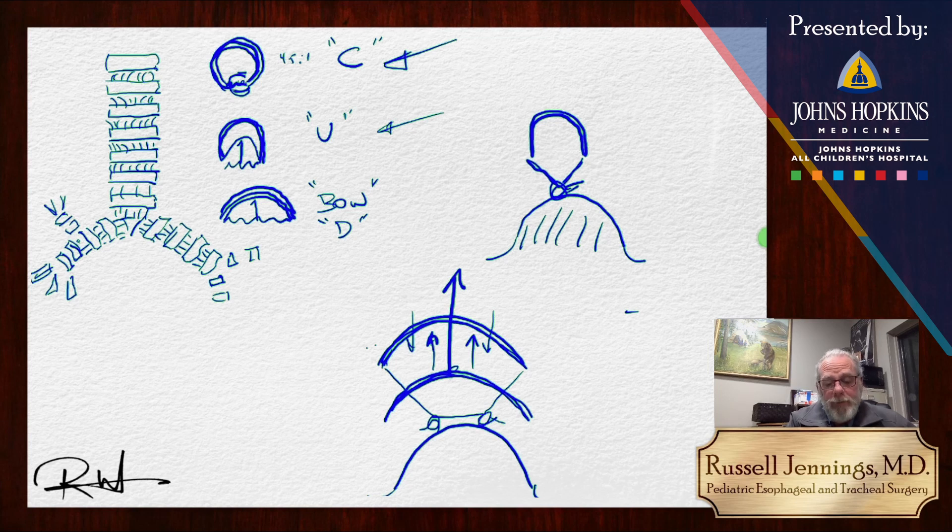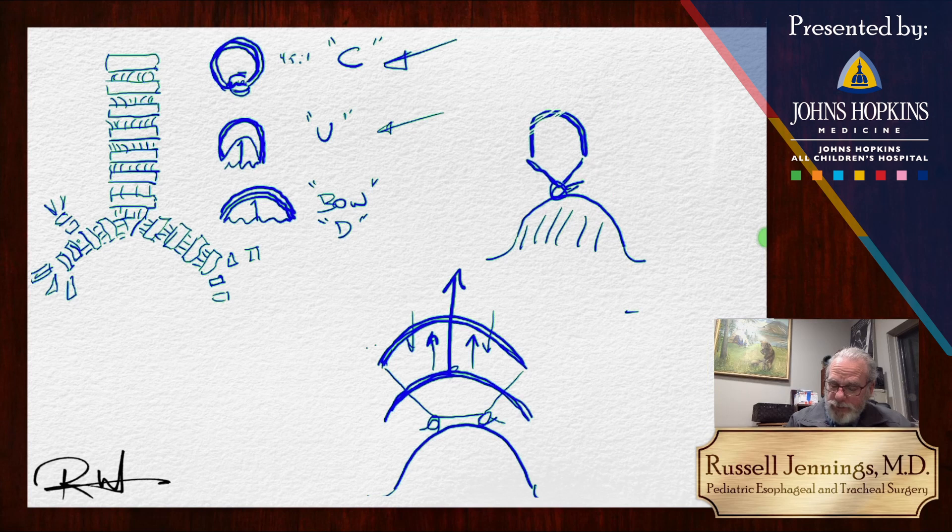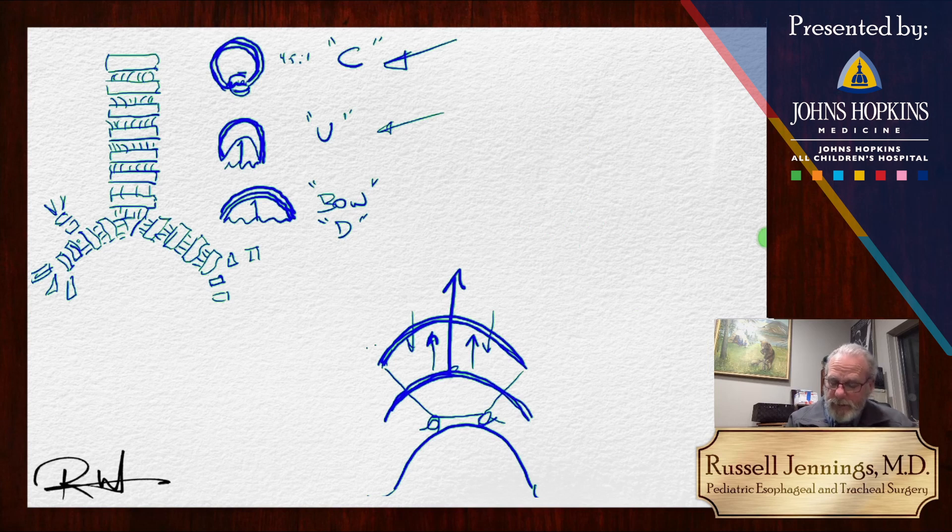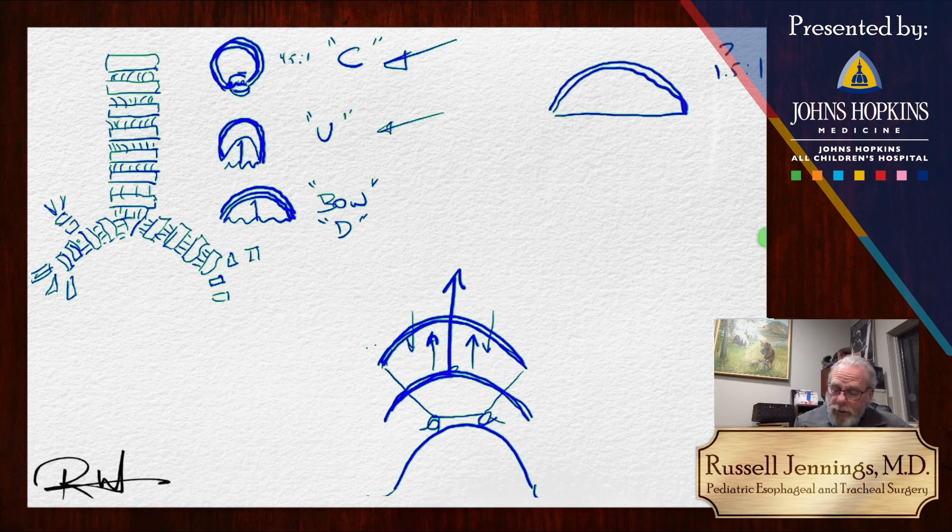There's another strategy we've recently developed. That strategy is to take that trachea with the rings, which are shaped like this, and a membrane which is just too long here, often a 1.5 to 1 ratio or 2 to 1 ratio. What we want to do is bend those rings back into the correct shape. Well, how would we do that?